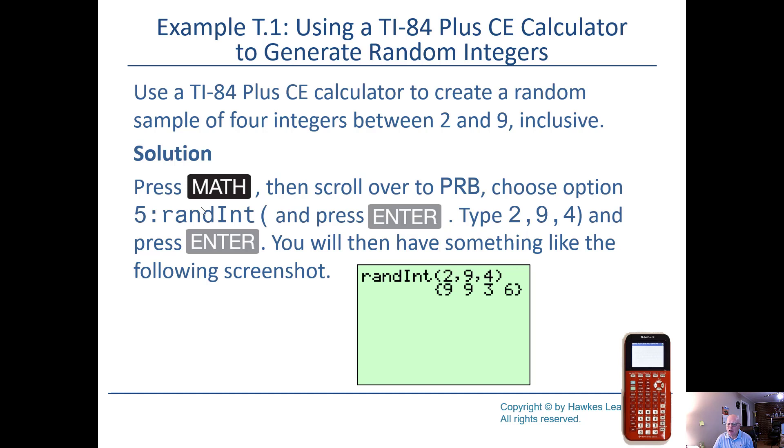Hit the enter. Type the two, the comma, which is in the lower left on your calculator. Type in a nine, another comma, a four, and if you're nice to your calculator, put in a right parentheses. If you don't, it's actually going to be smart enough to assume that you did want one there. Then you press the enter.